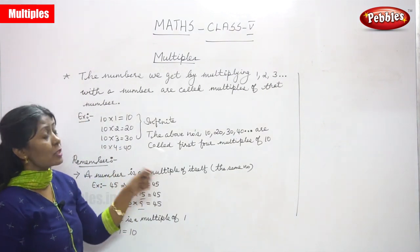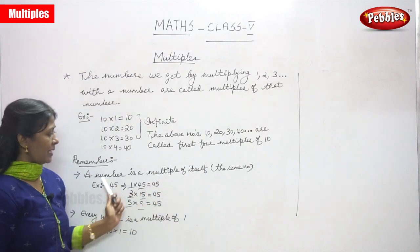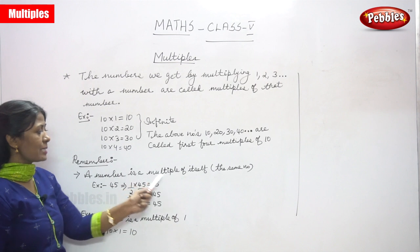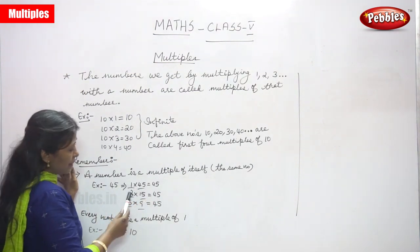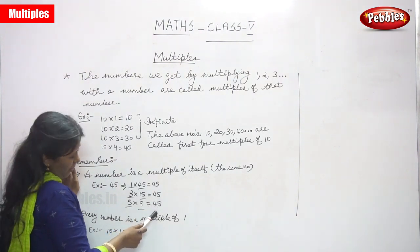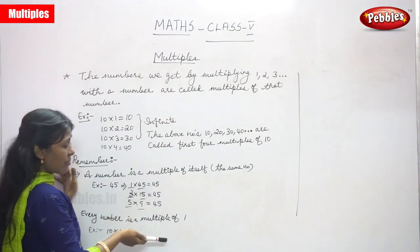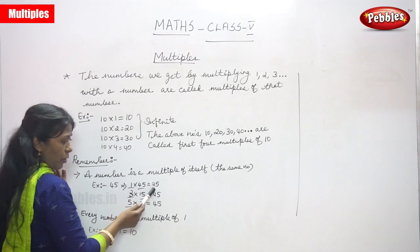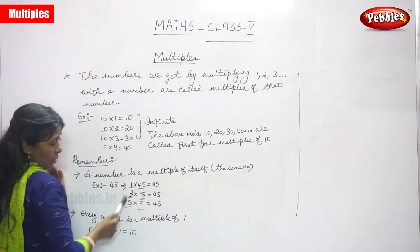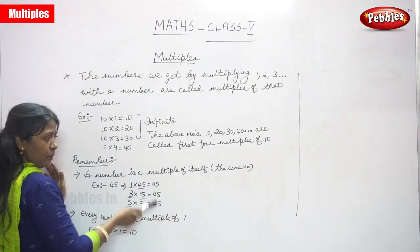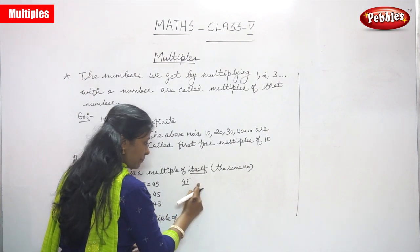Now, points to remember: a number is a multiple of itself. For example, with 45 — 1 into 45 is 45, 3 into 15 is 45, 5 into 9 is 45. So 1, 3, 5, 9, 15, and 45 are the factors of 45. But 45 is also one of the multiples of 45 itself.